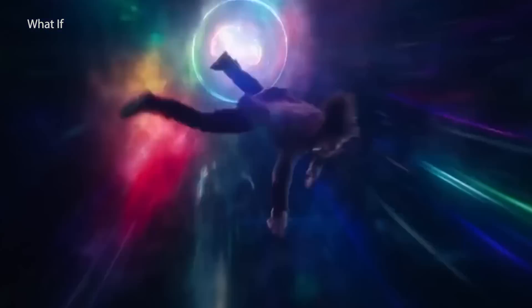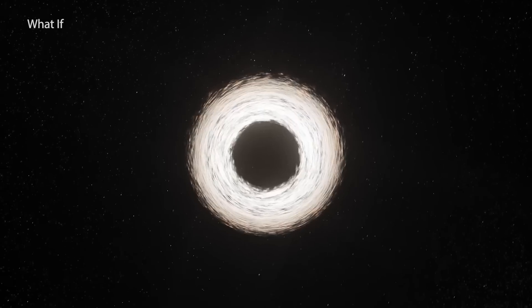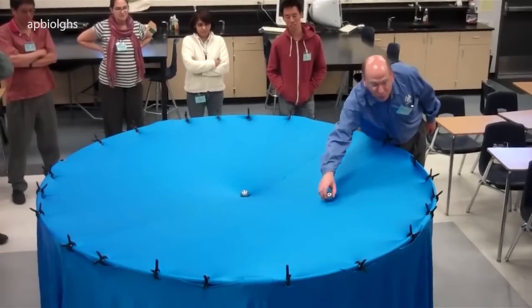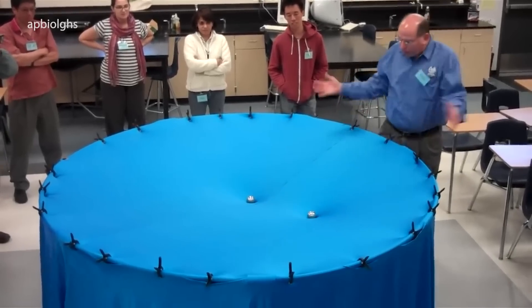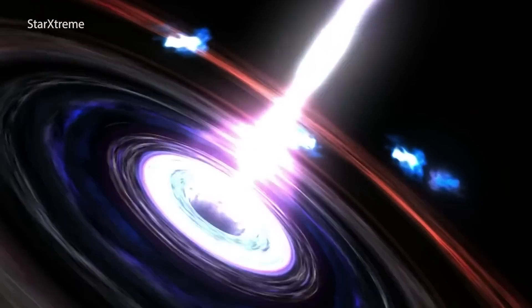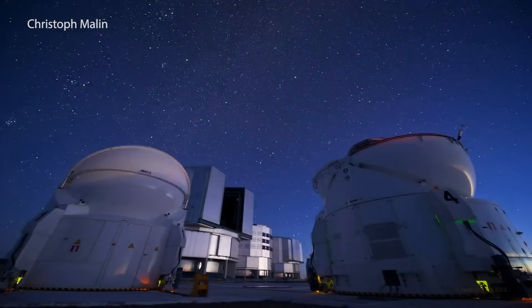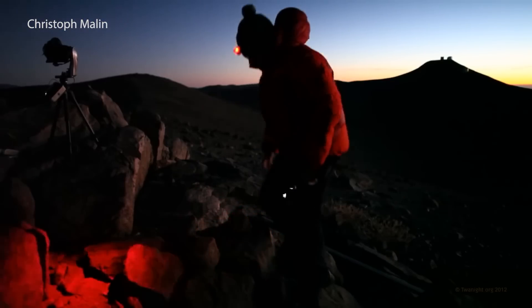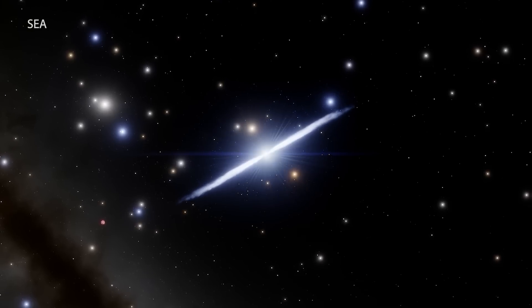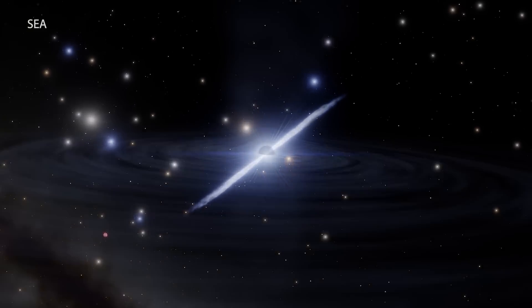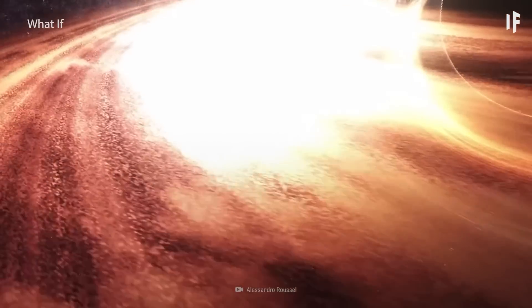The formidable gravity of a black hole prevents even light from escaping its grasp, rendering it invisible. Yet, the effects of its potent gravitational force on surrounding stars and gases can be observed. By scrutinizing the motion of a star orbiting a particular point in space, researchers can determine if it is under the influence of a black hole. When a black hole and a star orbit in close proximity, they emit high-energy light, detectable by scientific instruments. At times, a black hole's gravity is so powerful that it strips away a star's outer gases.